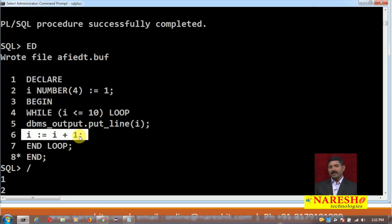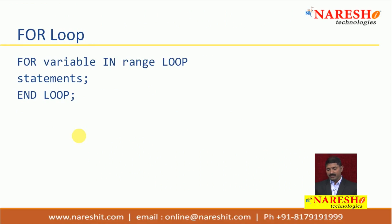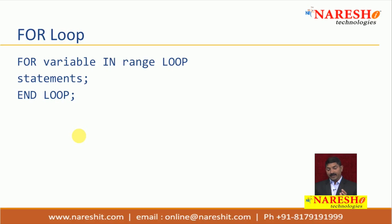Comparing the two examples: using basic loop it begins with the keyword LOOP and within the loop it has one exit condition. Using while loop it begins with the keyword WHILE and right there it has one entry condition, and within the body of the loop it has the executable statements and the increment statement. The basic difference is that basic loop has an exit condition whereas while loop has an entry condition. Apart from that you have the third loop — the for loop. Its syntax is: FOR variable IN range LOOP — statements — END LOOP.